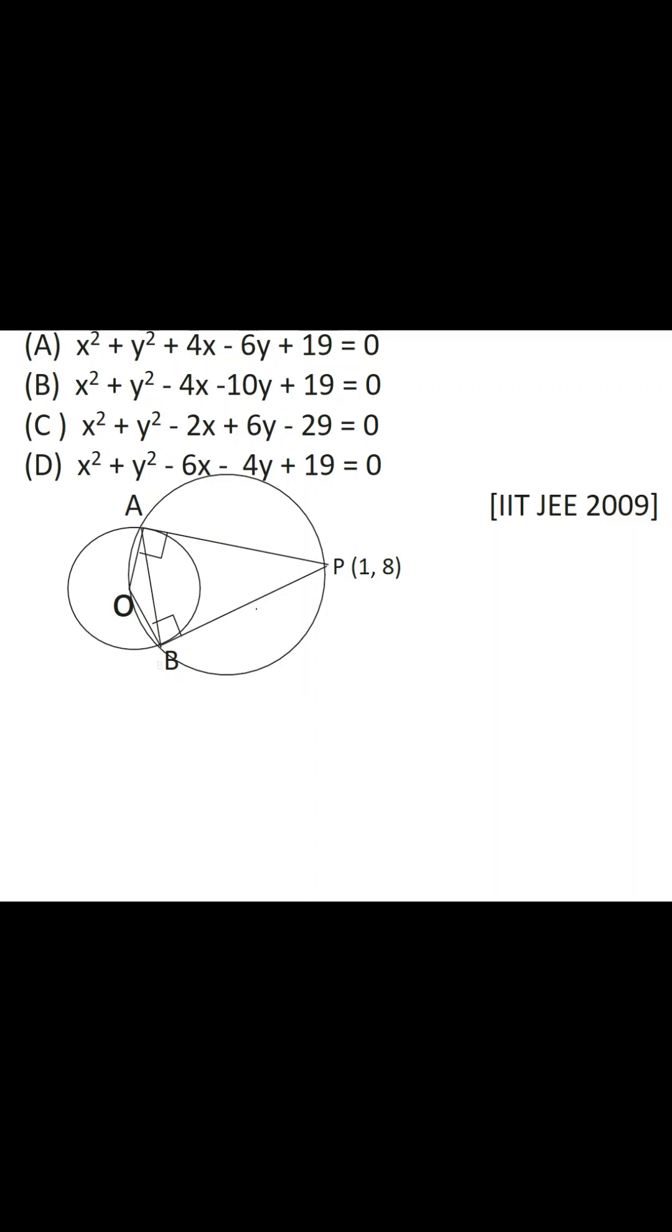Now this further means the circumcircle of triangle PAB passes through O. And not only that, since angle OAP and OBP are 90 degrees each, that means OP is going to be the diameter of the circle. It is known, we know O and we know P. We know the ends of the diameter. You can write the equation of the circumcircle very easily.